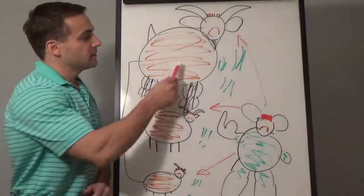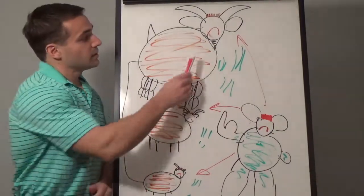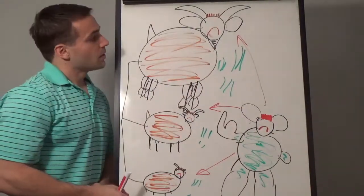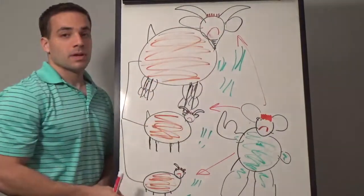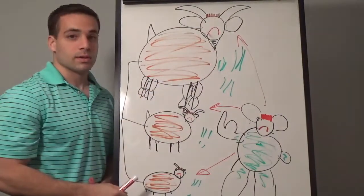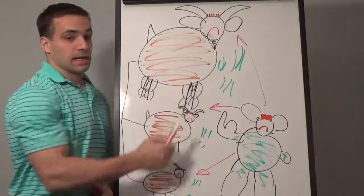There is an animal. There is a goat. The goat is a boy. The goat is brown. He is big.